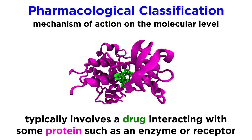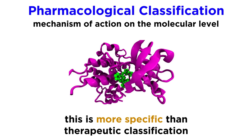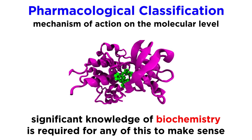As you can see, with pharmacological classification, we are typically dealing with the way that drug interacts with some biomolecule, usually a protein. This protein may be an enzyme, it may be a receptor, or otherwise, but there is typically some interaction between the drug and this protein that modifies the activity of that protein. For this reason, pharmacological classification is more specific than therapeutic classification, and significant knowledge of biochemistry is absolutely crucial in order for pharmacological classification to make any sense whatsoever.